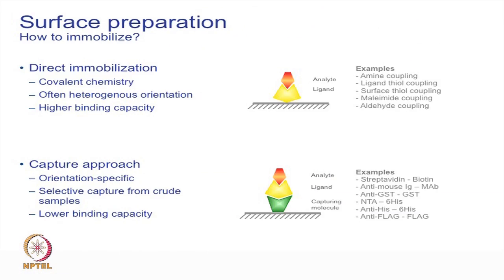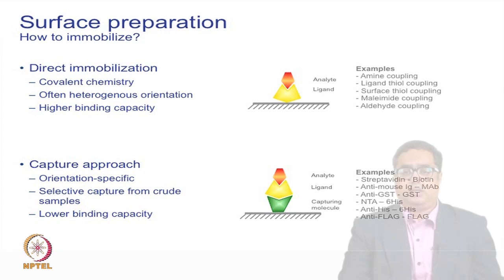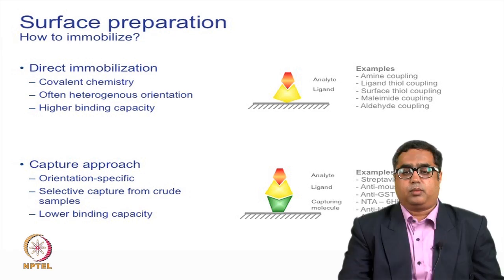Immobilization by direct method uses covalent chemistry and provides high binding capacity. Examples of direct immobilization methods are amine coupling, thiol coupling, aldehyde coupling, and maleimide coupling.